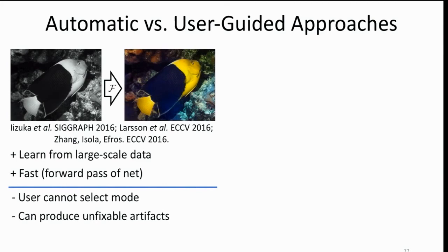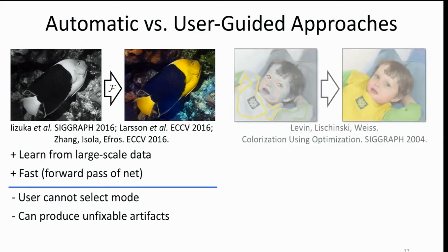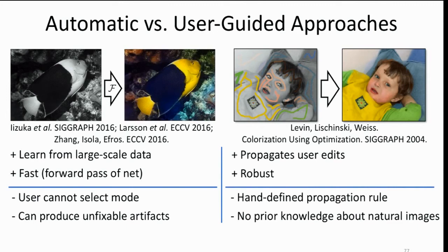What we did like about the previous automatic work was that we were able to learn from large-scale data and that it was fast because it was just a feed-forward pass of the network. But of course, the user had no control. They couldn't select a mode or they couldn't go and fix artifacts. There's also been very seminal work from Levin et al. The idea here is that you're given a grayscale image and you can draw strokes on top of it. Using lower-level texture or brightness cues or affinity measures, we can take these strokes and propagate them to the rest of the image. This actually works extremely well and is very robust. But one difficulty is this propagation rule has to be hand-defined in some way. Also, there's no prior knowledge in the system about natural images. Ideally, we'd like to combine the best of both worlds here. We'd like to be able to learn the edit propagation from large-scale data.